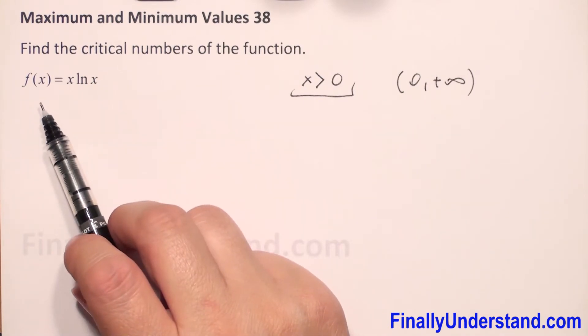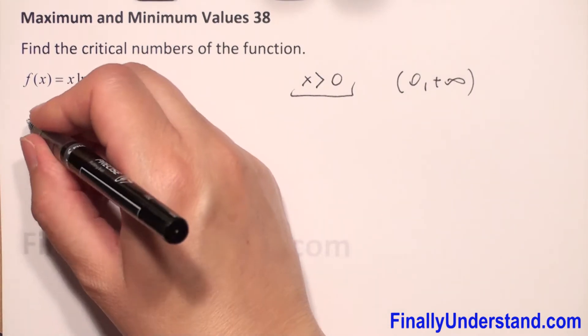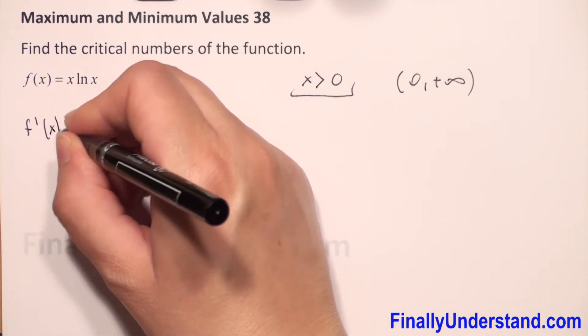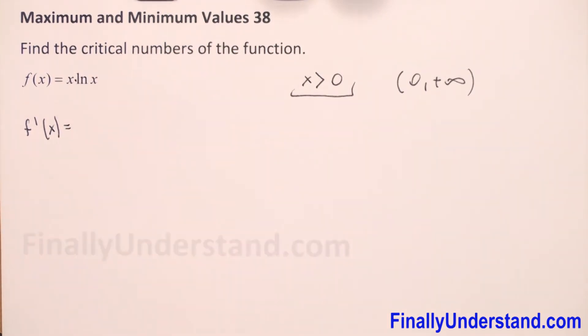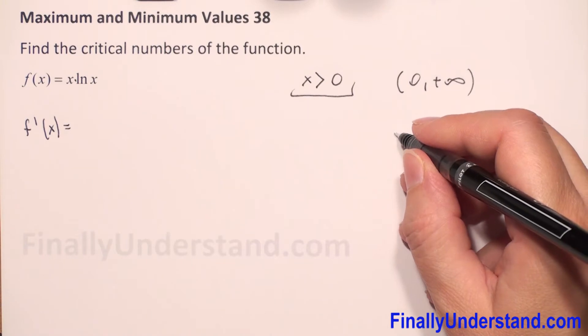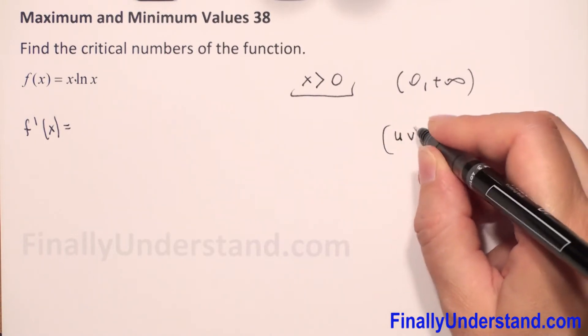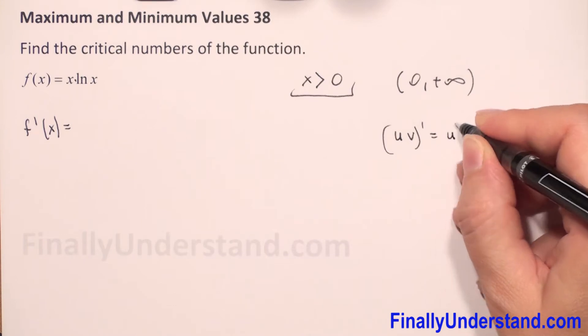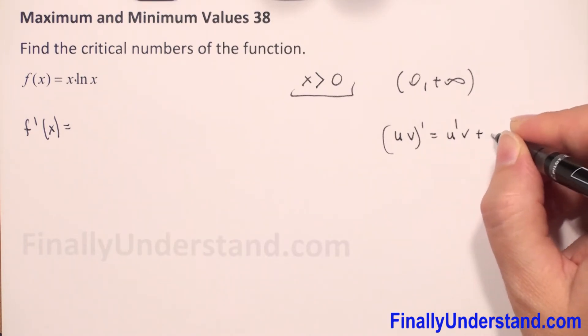Now, we have to find the derivative of our function f. f'(x) is equal... Because we have multiplication here, we will use the product rule. When we have u times v, the derivative is u' times v plus v' times u.